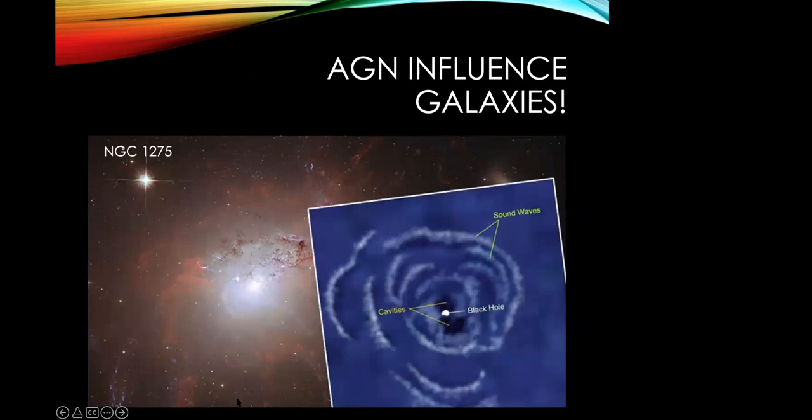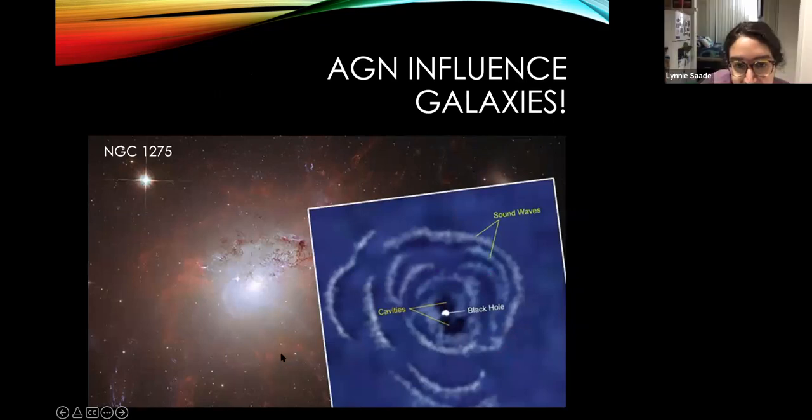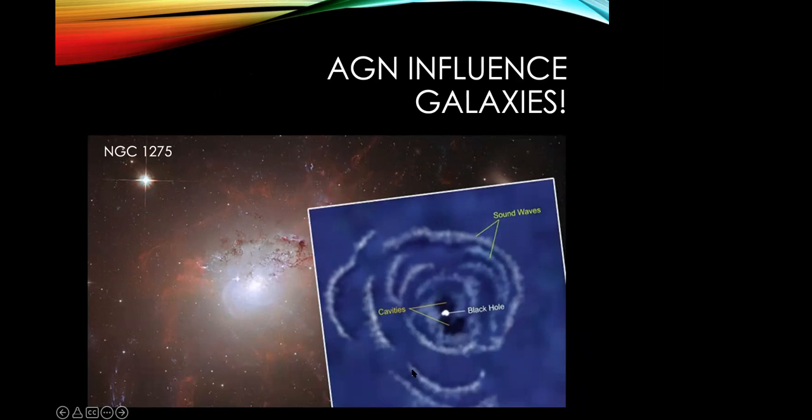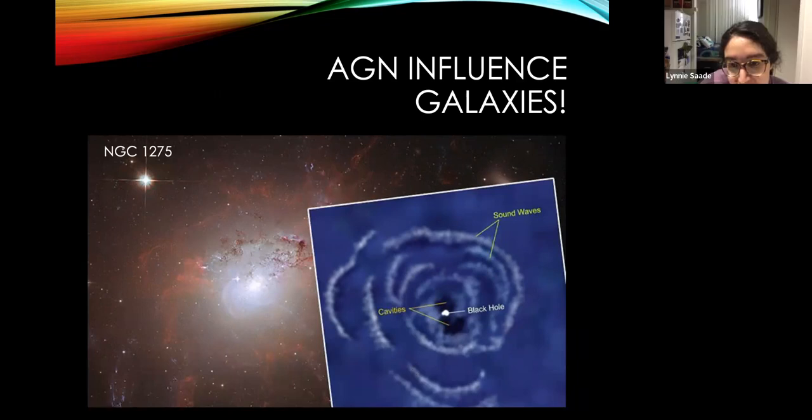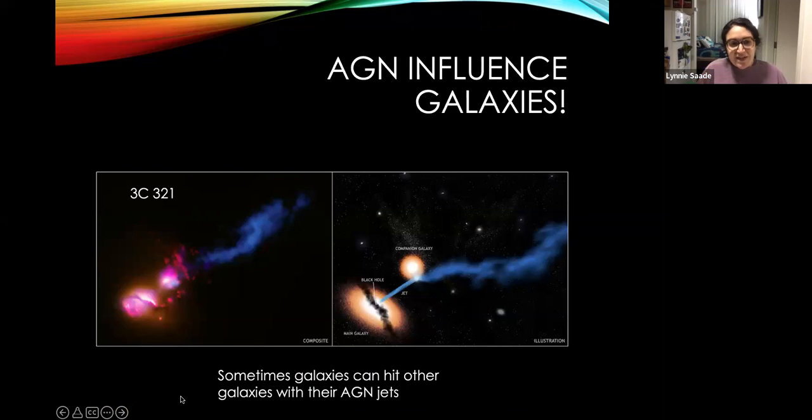You can also sometimes see sound waves created by the jets of the black holes as they eject energy into the gas of the galaxy. And this particular galaxy, NGC 1275, or Perseus A, has been found to have sound waves emitted from the black hole that are like a million billion times lower than the human ear can hear. So if supermassive black holes could sing, they'd have a really deep voice.